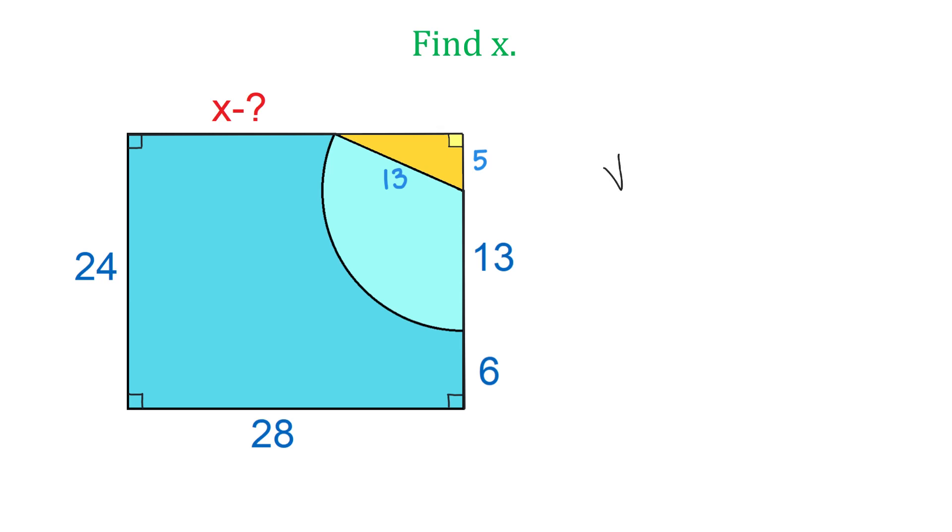This will be the square root of the hypotenuse squared minus the other side squared. Then 13 squared is 169 and 5 squared is 25. Then 169 minus 25 is 144 and square root of 144 is 12. So the top side of this triangle is 12 units.